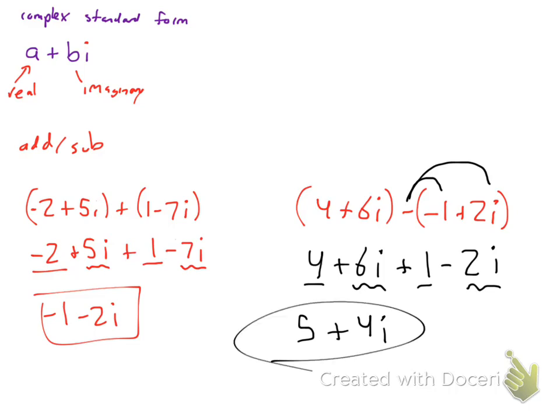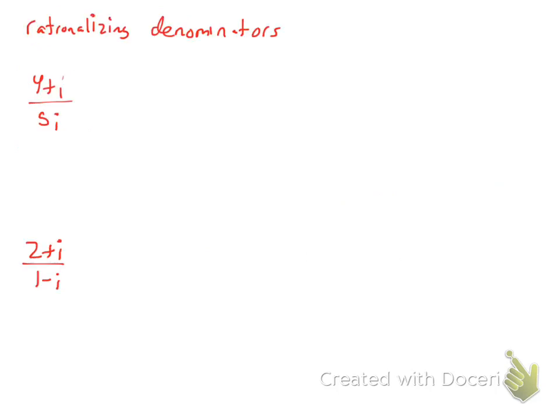And the last thing that we want to talk about here, before we end the video, is rationalizing denominators. I don't like i's or square roots in the basement. So, we do it the same exact way. So, here's the cool thing. If it's just an i, or a five i, a two i, a something i, then all you have to do is multiply the top and the bottom by i. Multiply it by the i to get rid of it. Don't forget that because the top is a binomial, that you will have to distribute.